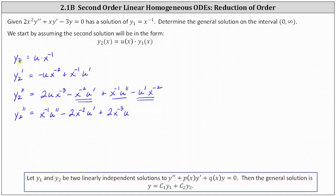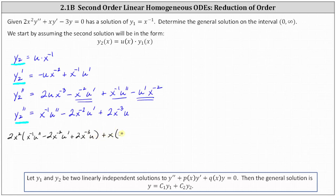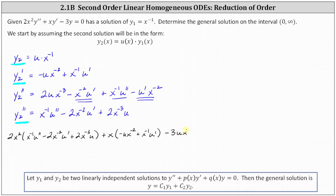Now we substitute y2, y2 prime, and y2 double prime into the given differential equation. This gives us two x squared times (x to the negative one times u double prime minus two x to the power of negative two times u prime plus two x to the power of negative three times u), plus x times y2 prime, which is (negative u·x to the power of negative two plus x to the power of negative one times u prime), and then minus three times y2, which is minus three u·x to the power of negative one, equals zero.